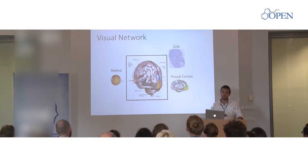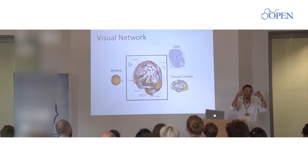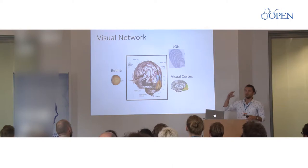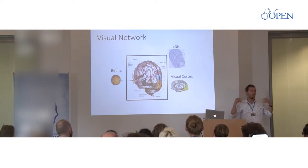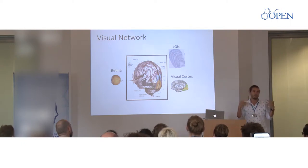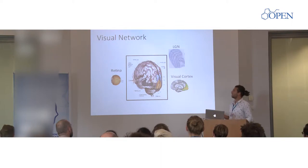So the visual network: when our eyes are open, we get information through the retina and the eye, then it goes to the thalamus, to the LGN, and then from the LGN to the primary visual cortex, V1, and to the rest of the visual network. I'm mainly going to talk about the visual cortex and the primary visual area.